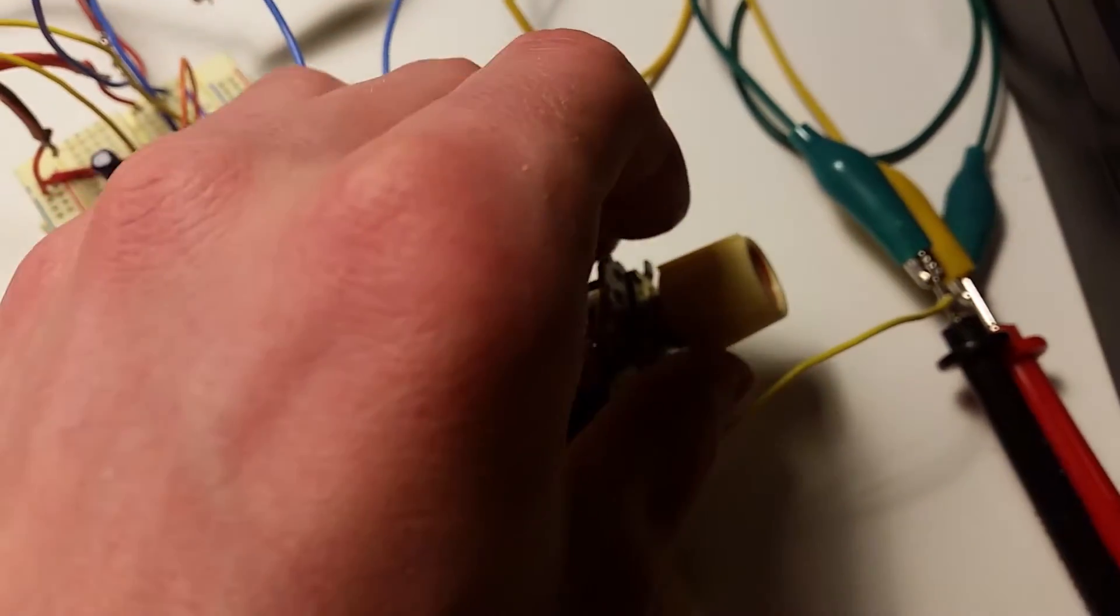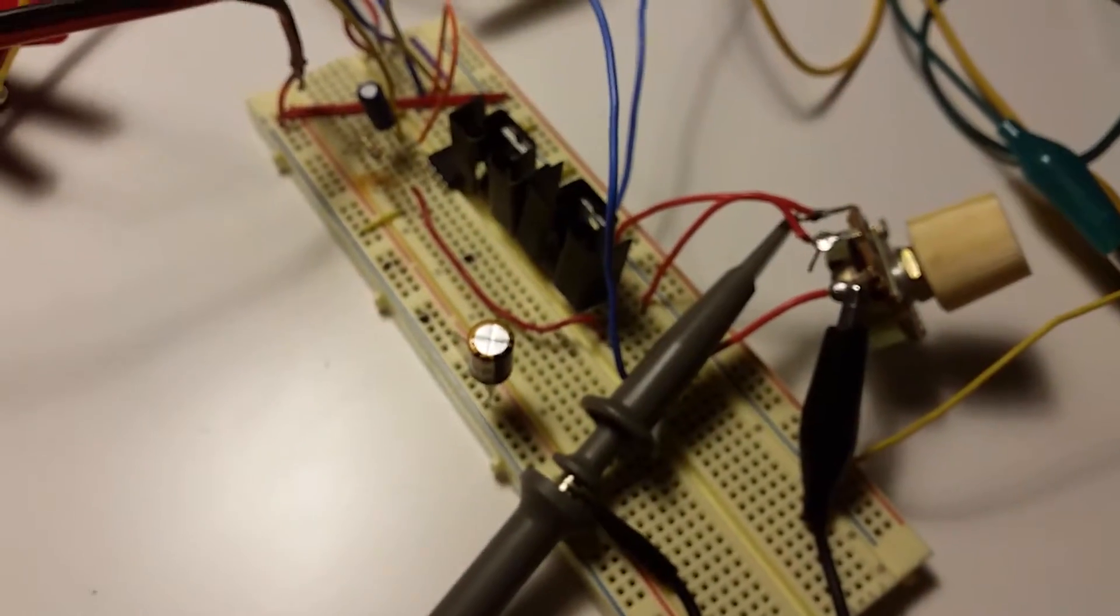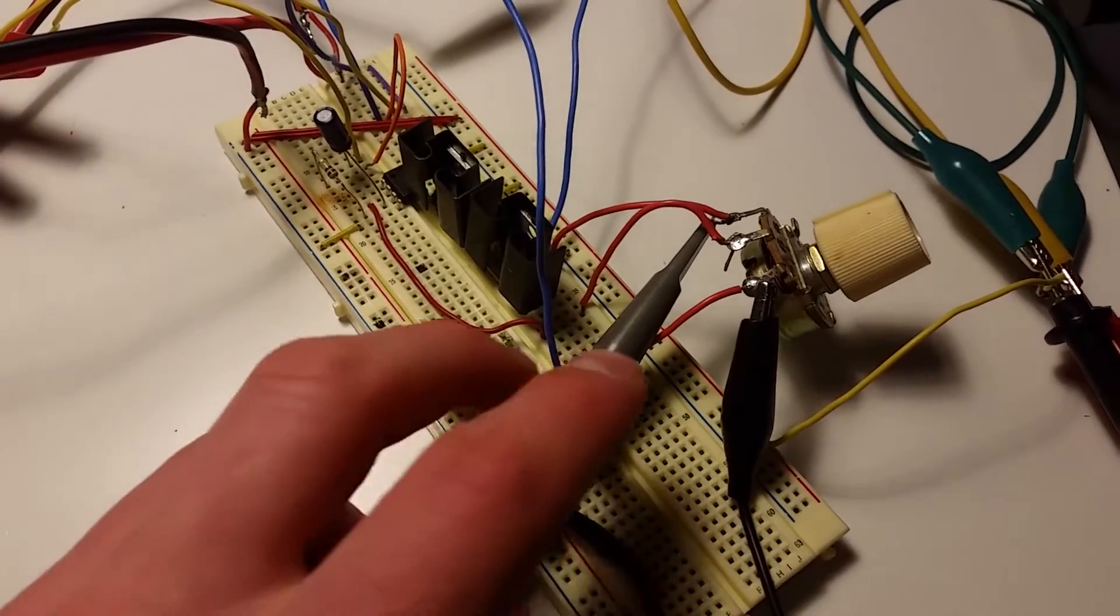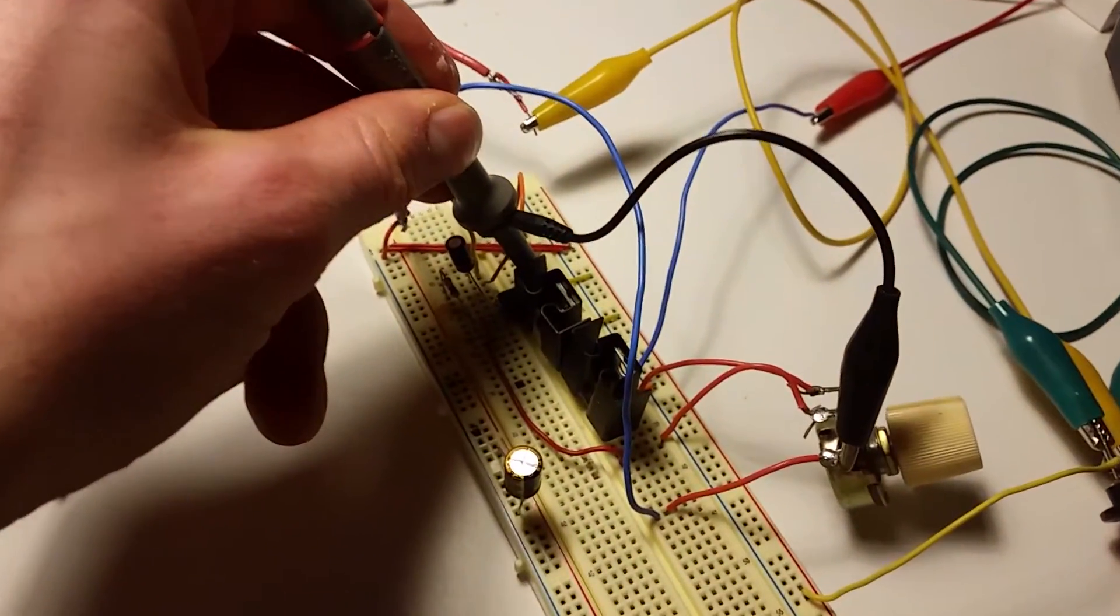And I will adjust the feedback with that. That's the 50k pot I showed you in the schematic. Oh, this is the correction signal being applied by the op amp, and you see it's one hell of a correction signal.